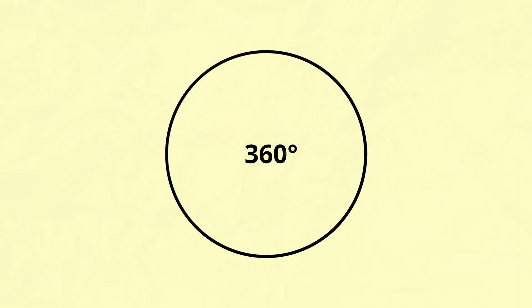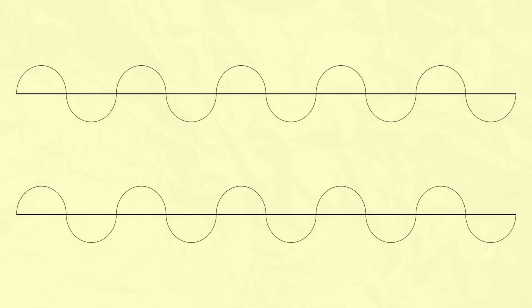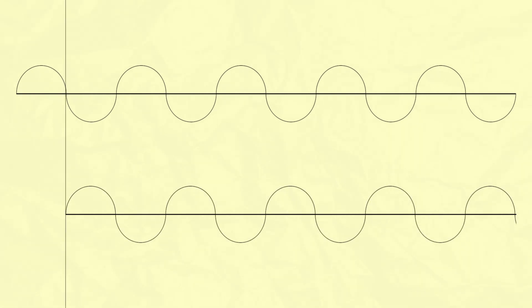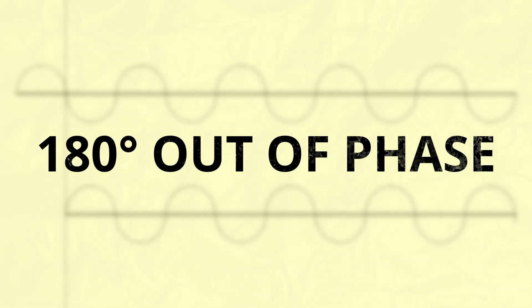This is called one cycle because the wave has made one full revolution of a compression and rarefaction, returning to its starting point. If you swing the second half of the sine wave back, you see it as completing a circle, revolution, or cycle. A complete circle is 360 degrees. So if something is off by one half of a revolution, it's considered 180 degrees out of phase.